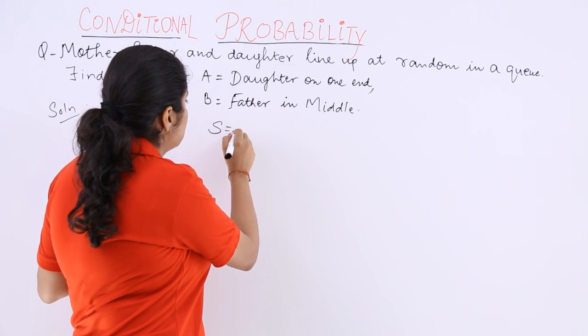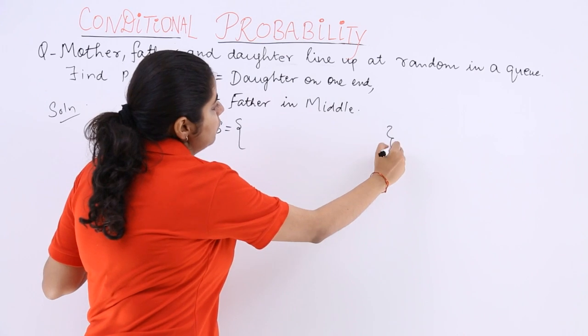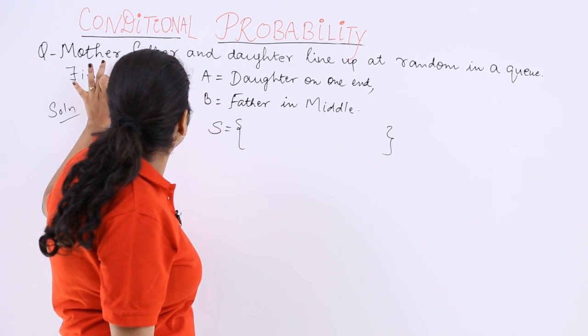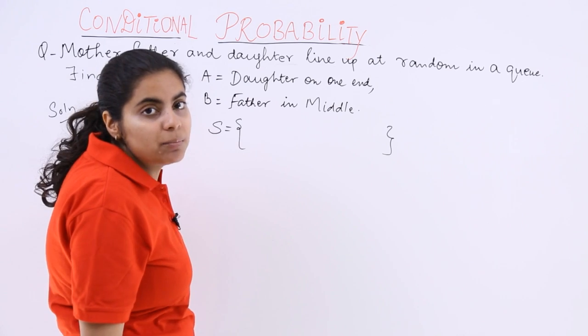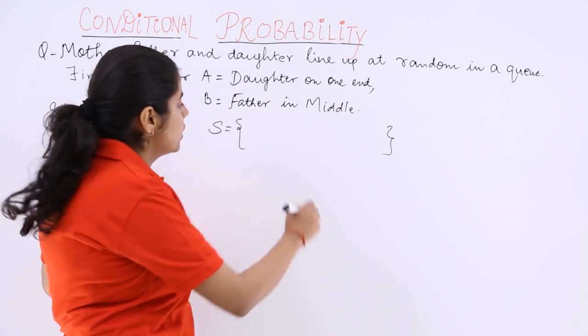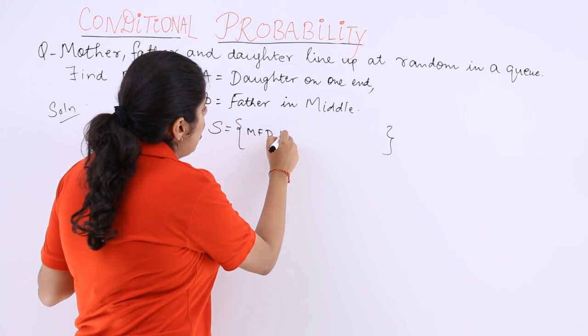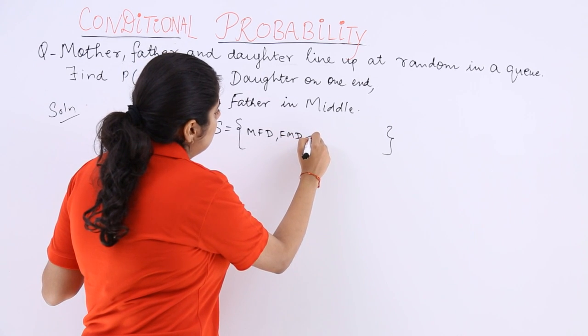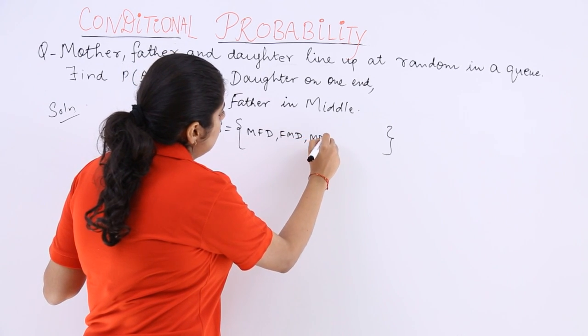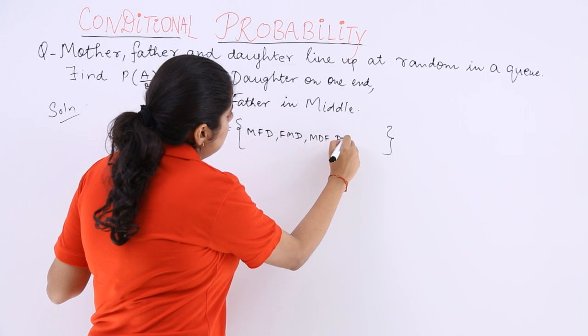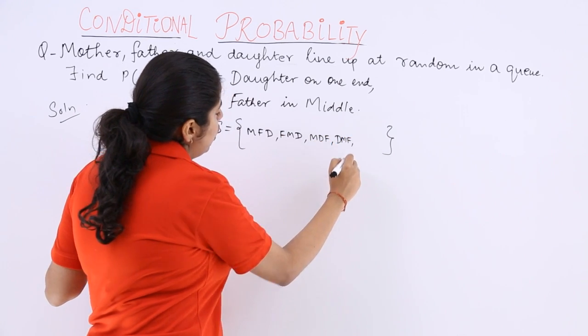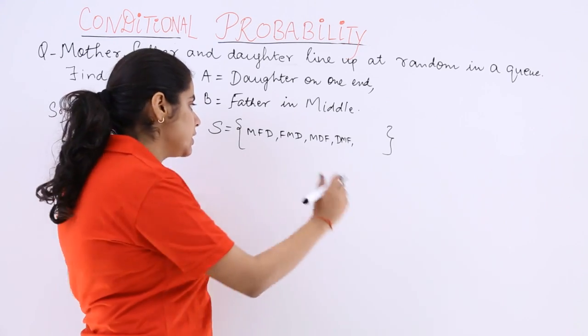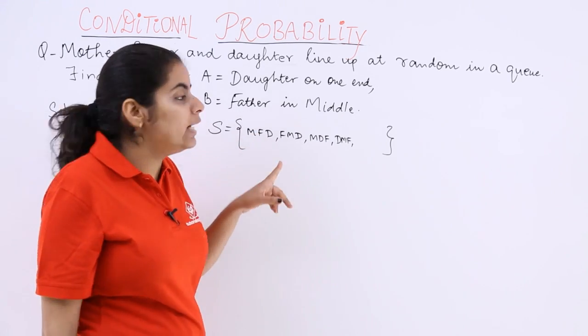So if a sample space is there, there can be different events in that sample space. See 3 people are there, let mother be denoted by M, father by F and daughter by D. So either they could be MFD or FMD or MDF or DMF. What I am doing is I am just creating different possible arrangements.